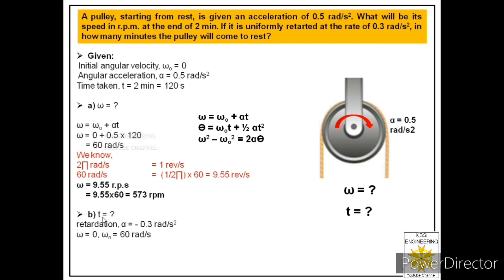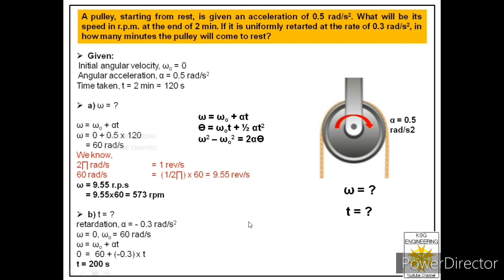Applying the equation omega equals omega naught plus alpha times t: putting omega as 0, omega naught as 60, and alpha as minus 0.3, we get time as 200 seconds. So after 200 seconds the pulley will come to rest. We have the answer for the second part as well.